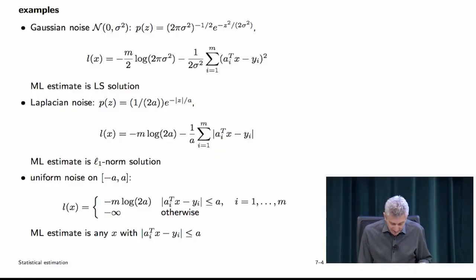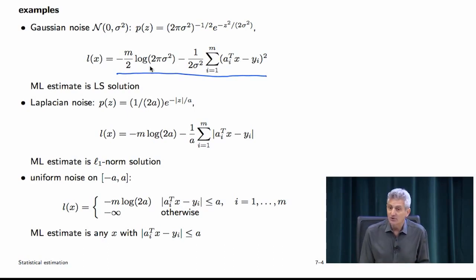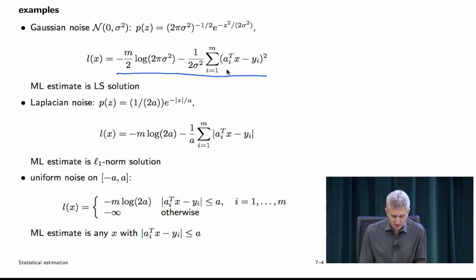So where you might give a story about your penalty function in terms of how much it irritates you to have big or small residuals, all of that can be transposed perfectly to a statistics framework. Instead of saying 'a positive residual is more irritating than a negative one,' you're really saying something about the distribution of the noise. Let's look at examples. Suppose those noises are Gaussian. Taking the negative log likelihood gives a constant plus the squared term. The constant doesn't matter when maximizing — so you just minimize the sum of squared residuals. That's least squares.